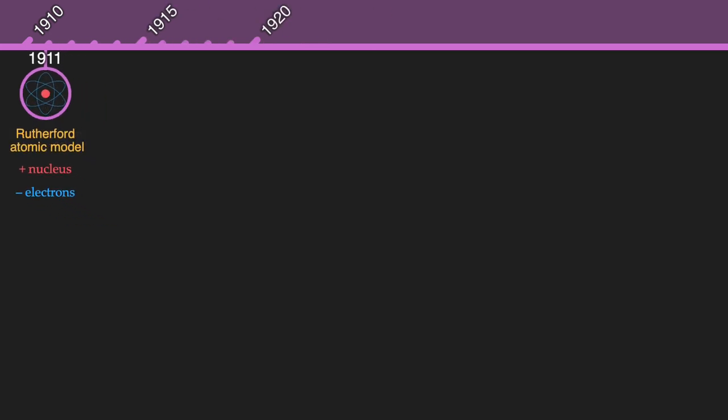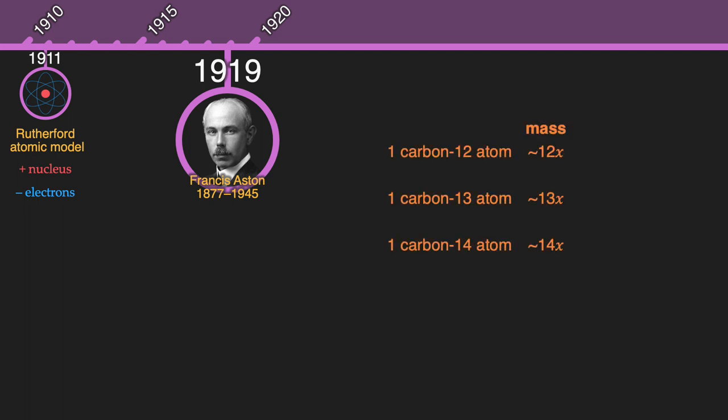The story of our discovery of the neutron starts in 1919. Scientist Francis Aston is doing research on isotopes, which are atoms of an element that vary by their mass. He discovered that the isotopes he was working with all had masses that were whole number multiples of the mass of the hydrogen atom.